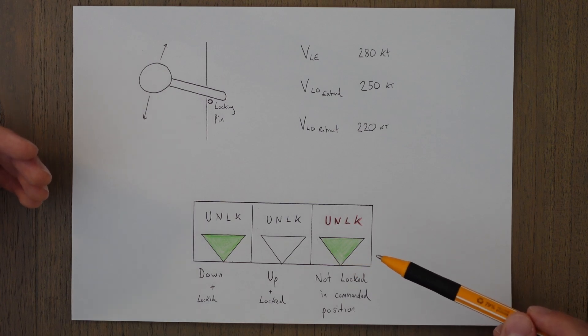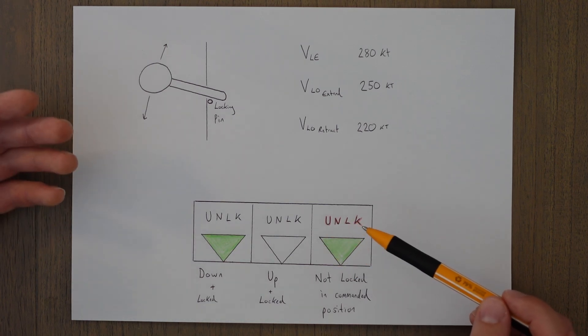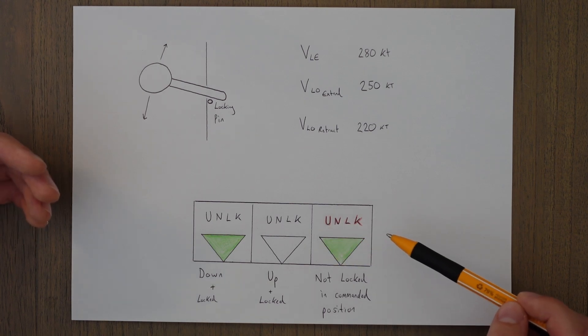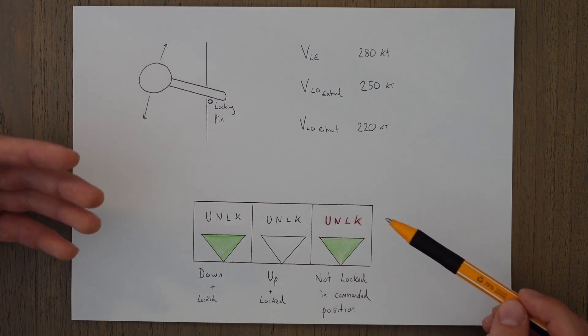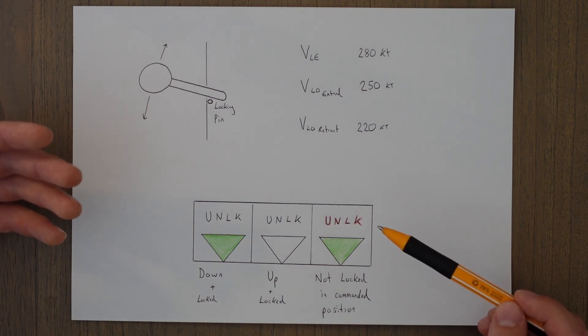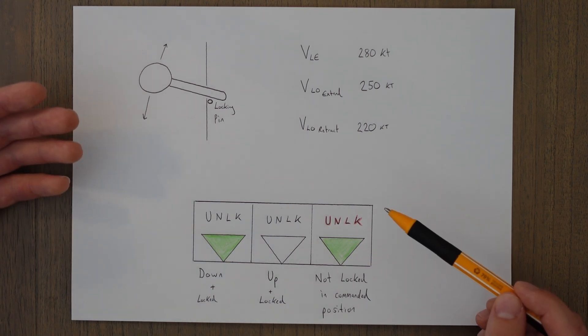When the lights are not green, they can be off, which indicates that the gear is up and locked in the up position, or they might show red, which means that the microswitch sensor on that landing gear set has not been activated, so the gear is not confirmed down and locked or up and locked.